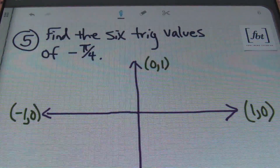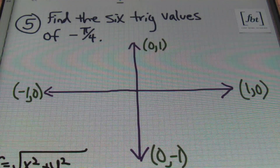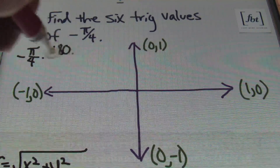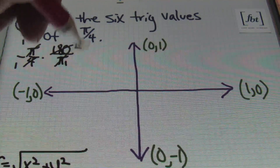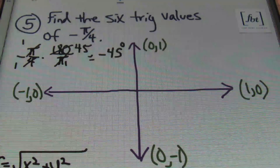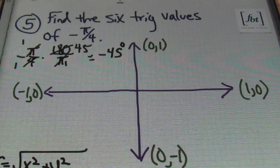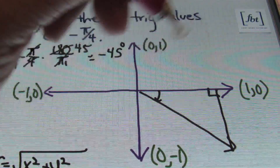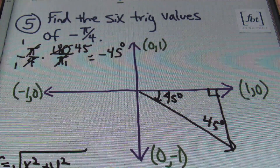I have one last problem for you, ladies and gentlemen. Problem number 5 says find the six trig values of negative pi over 4. Notice negative pi over 4 is written in radians. To find out what this value is in degrees, all you would need to do is multiply negative pi over 4 times 180 over pi. Your pi's will cancel out, and 4 goes into 180 45 times, so multiplying straight across you would end up with negative 45 degrees. So negative pi over 4 is the same thing as negative 45 degrees. Graphing negative 45 degrees takes us to the middle of quadrant 4. I'm going to go ahead and create a right triangle. This angle that we went down by is 45 degrees, so we have a 45 degree angle here, a 45 degree angle here, and a 90 degree angle — a 45-45-90 degree triangle.